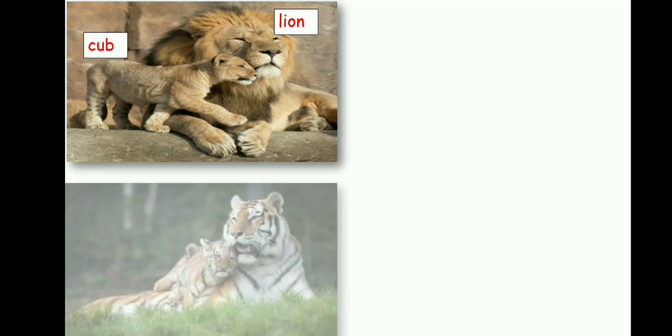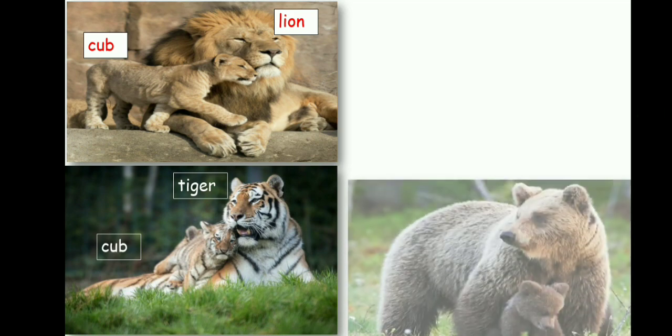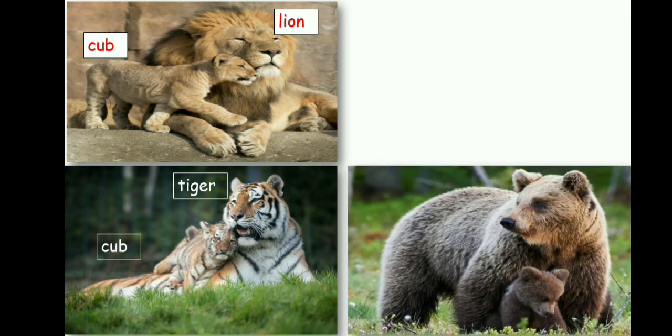Here we have a lion and the lion's young one is called a cub. This is a tiger and the young one of a tiger is called once again cub. Here what we have is a bear and the young one of a bear is also called a cub.